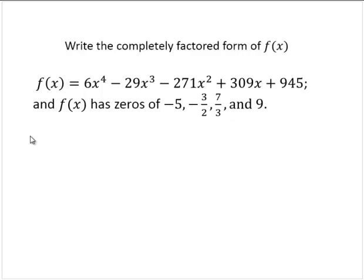Write the completely factored form of f(x). Here we are given that f(x) equals 6x to the fourth minus 29x cubed minus 271x squared plus 309x plus 945.